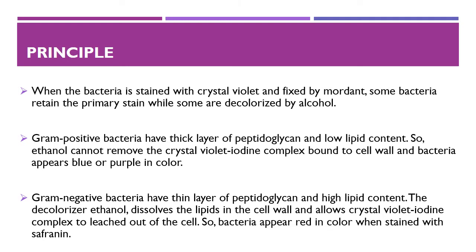In the case of gram-negative bacteria, cell walls have a thin layer of protein-sugar complex called peptidoglycan, and lipid content is high compared to gram-positive bacteria. When these bacteria are exposed to alcohol, the decolorizer dissolves the lipids in the cell wall, which allows the crystal violet-iodine complex to leach out of the cells. So when stained with safranine, they take the stain and appear red in color.